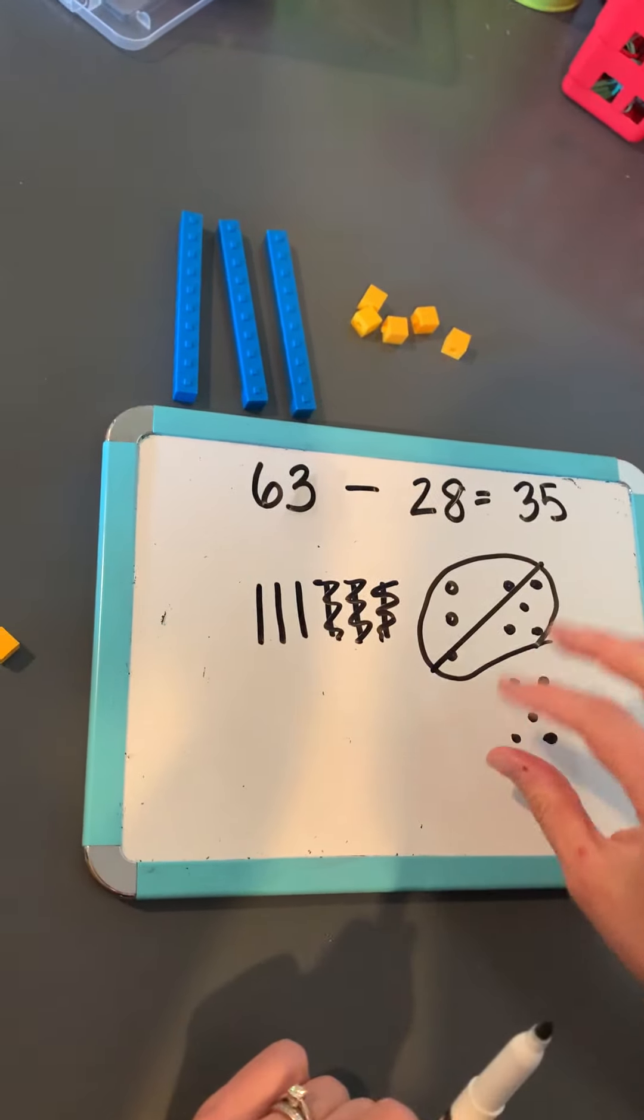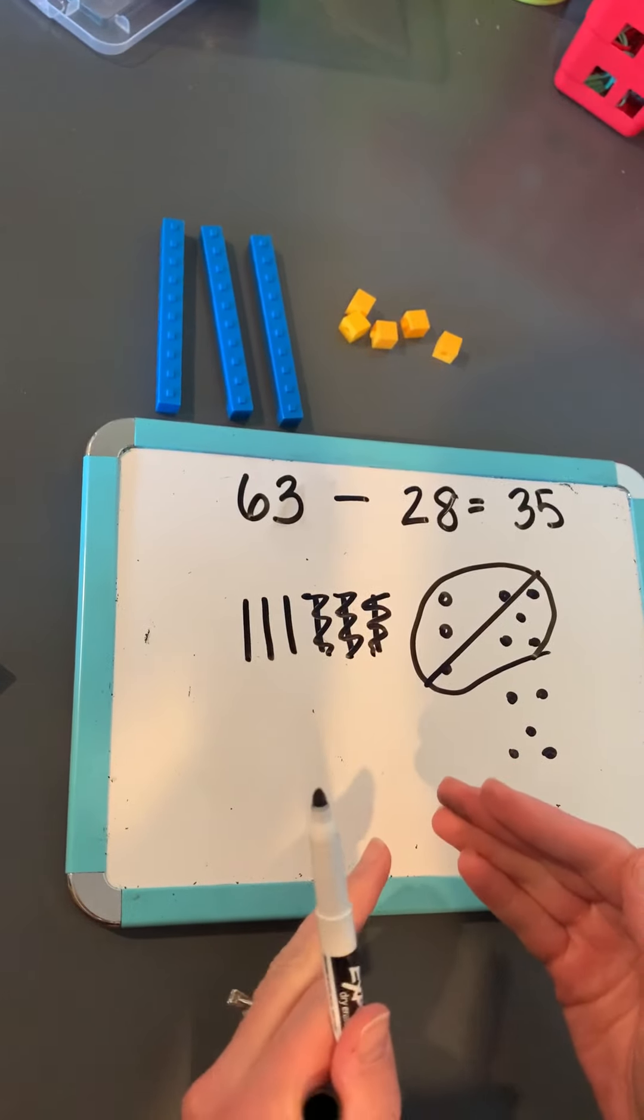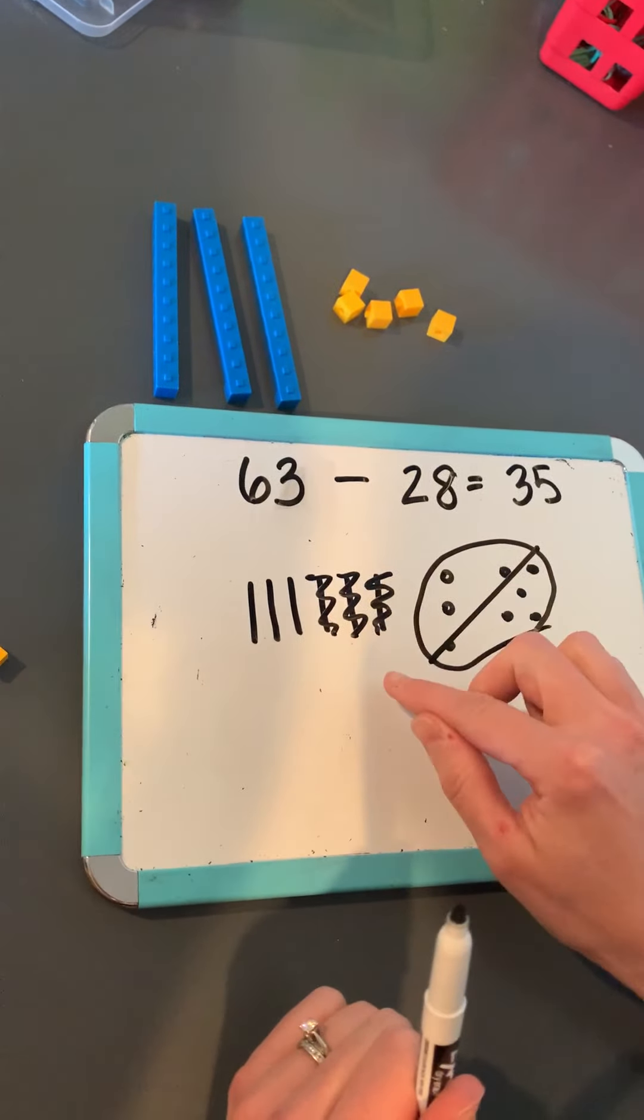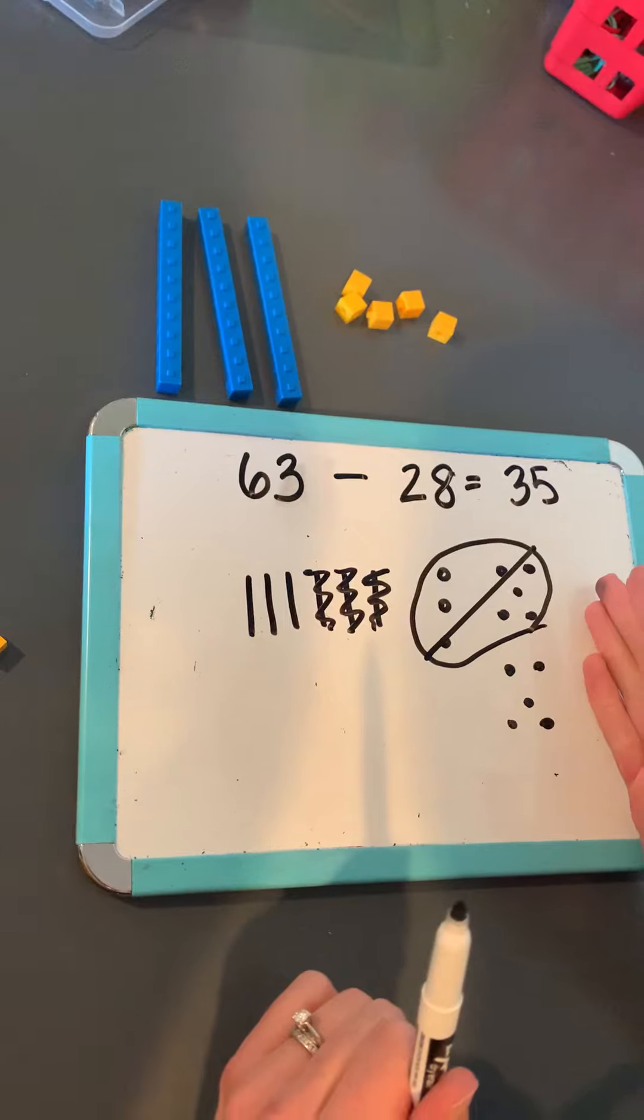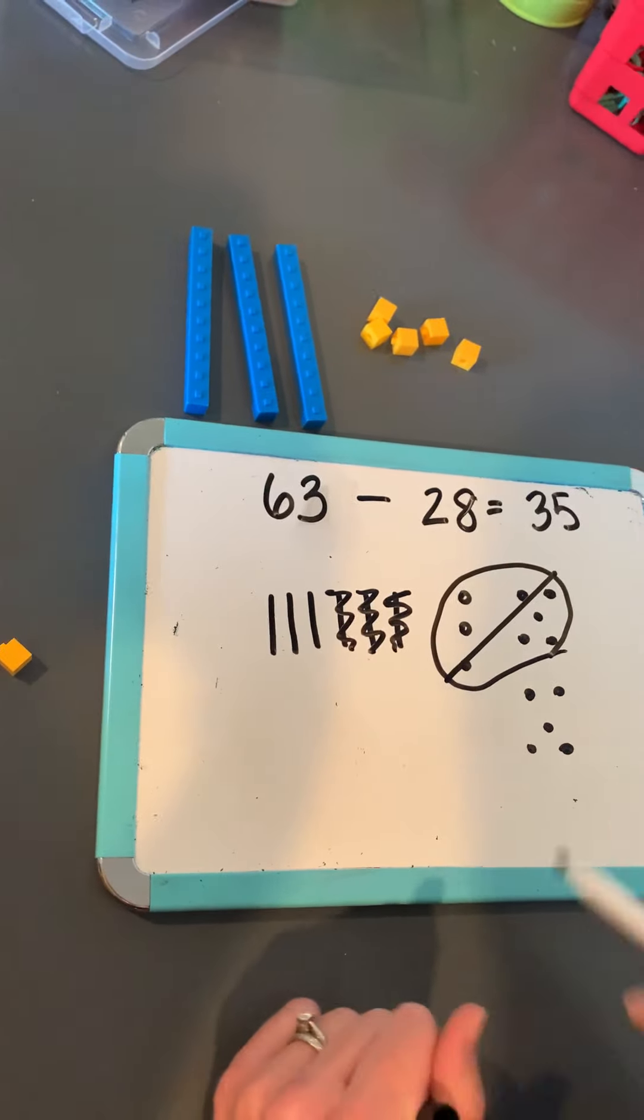So again, when you're drawing your picture, if you don't have enough ones, cross out a rod, replace it with 10 ones, and then go ahead and start. Good luck.